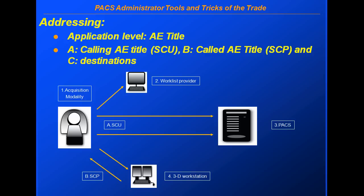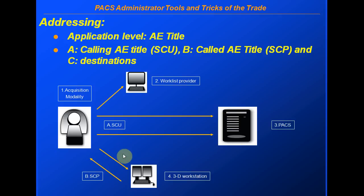Thirdly, you want to configure the destinations. In our scenario, there could be a Calling AE title and a Called AE title — for example, if a workstation wants to do a query of a modality. And then we have destinations: a Worklist Provider, a PAX Archive, a PAX Database or Image Manager, and a Workstation.